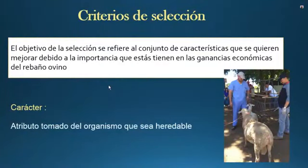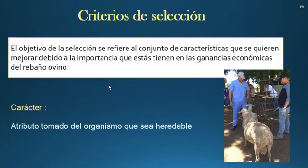Miremos los criterios de selección. El objetivo de la selección de estos animales se refiere al conjunto de características que se quieren mejorar debido a la importancia que tienen en la ganancia económica del rebaño. Usted necesita elegir reproductores según su raza, pero también según el objetivo que usted tiene: si quiere una oveja para producción de lana, para producción de carne, o solamente para mantener su progenie. Este criterio de selección va a estar de acuerdo a mejorar su ingreso y su ganancia económica dentro del sistema.